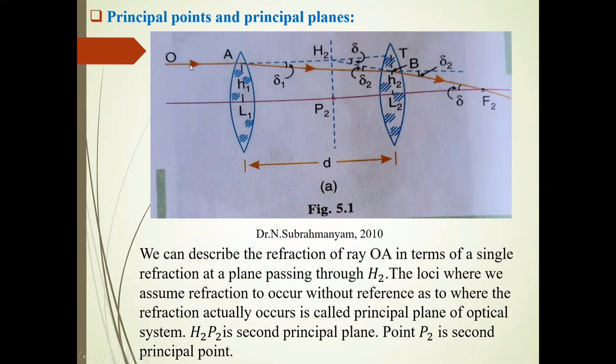In the first case, along path OA to BF2, there are multiple refractions. But if we introduce this H2P2 plane, there is only one refraction.